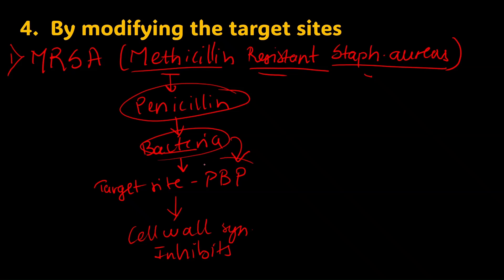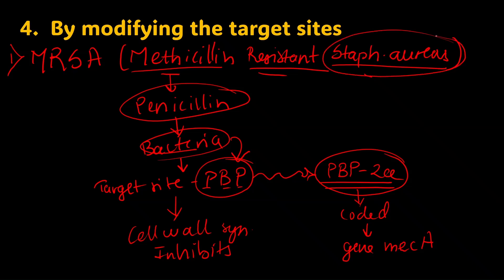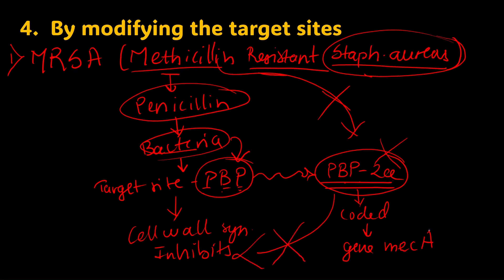In MRSA, the penicillin-binding protein is modified to a form called PBP2a. This altered target site is coded by a gene called the mecA gene. Because of this modification, methicillin cannot bind to PBP2a, and it fails to inhibit cell wall synthesis — that is the mechanism of MRSA resistance.